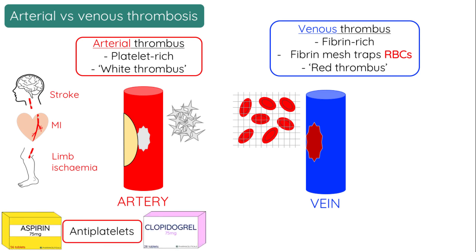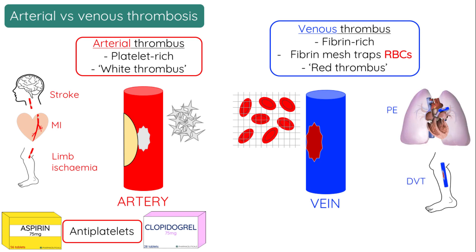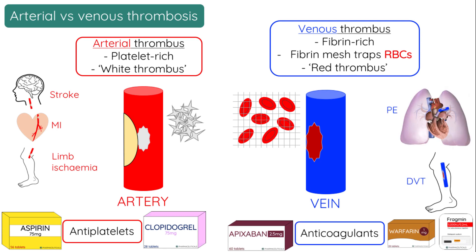In DVT and PE, however, anticoagulants are found to be more effective because anticoagulants inhibit aspects of the clotting cascade, and the clotting cascade results in the production of fibrin, which is the main component of these clots.